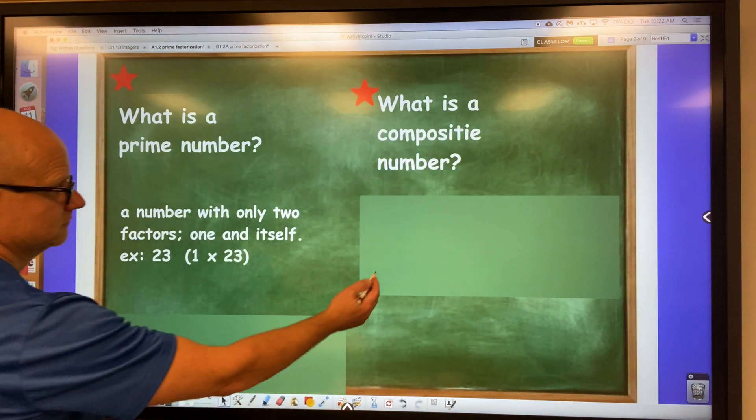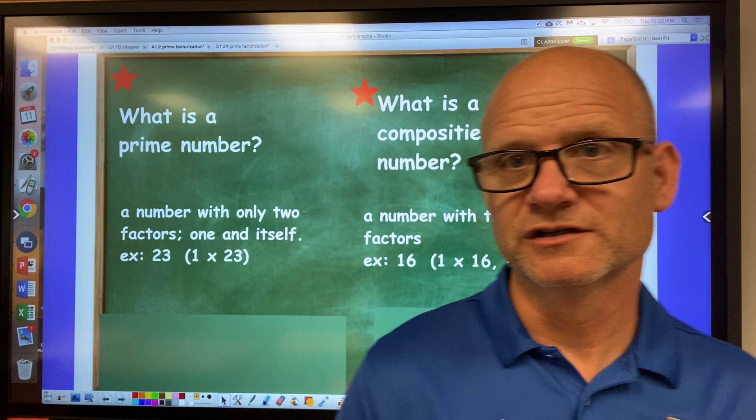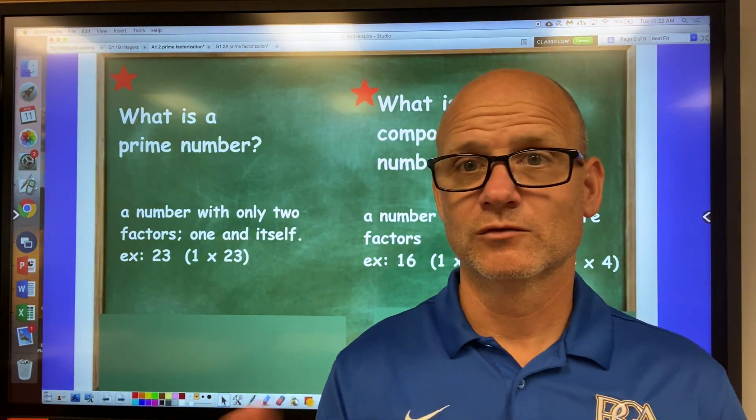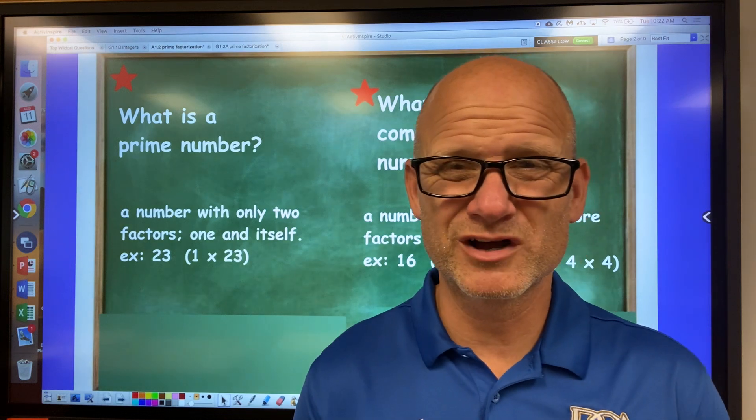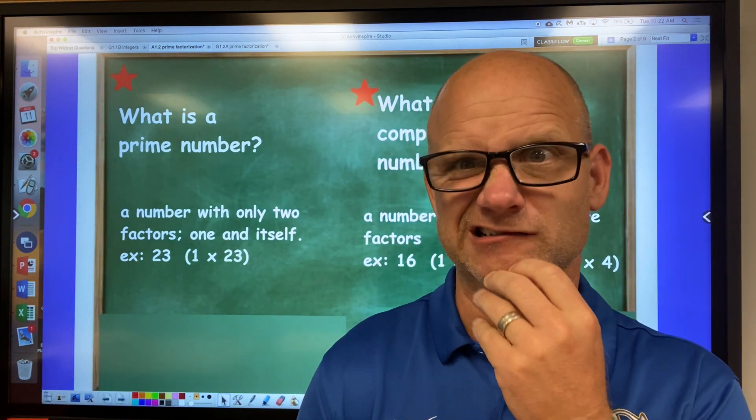And then composite numbers, well, composite numbers have more than two factors, such as 24. One times 24, two times 12, three times eight. I think that's it. Yeah, I got them all. Okay.